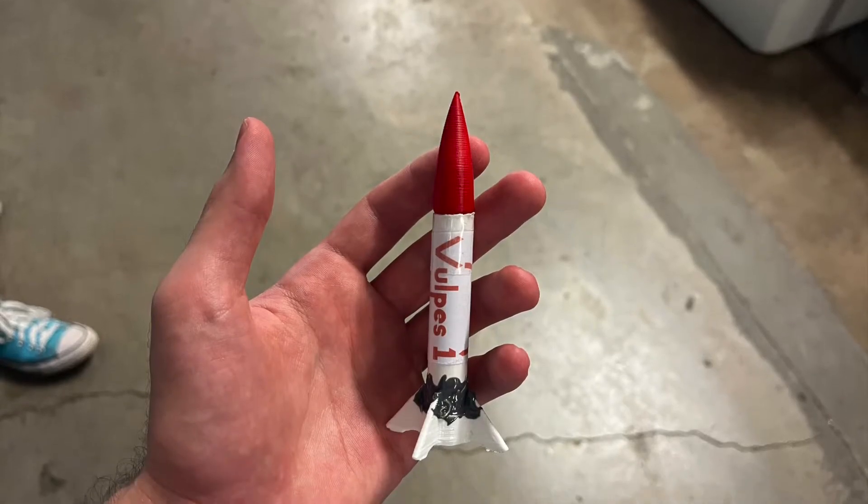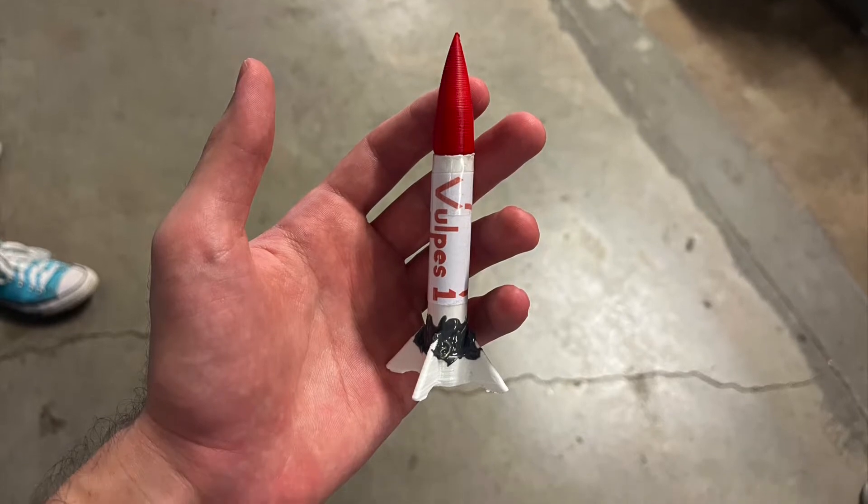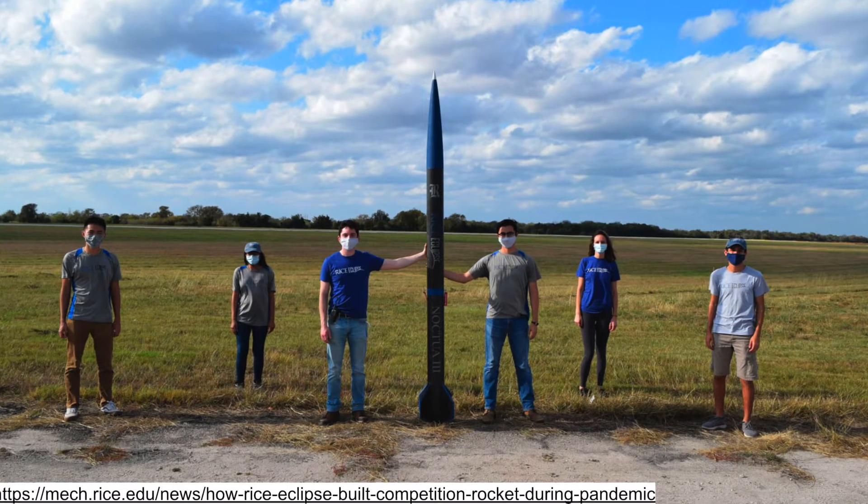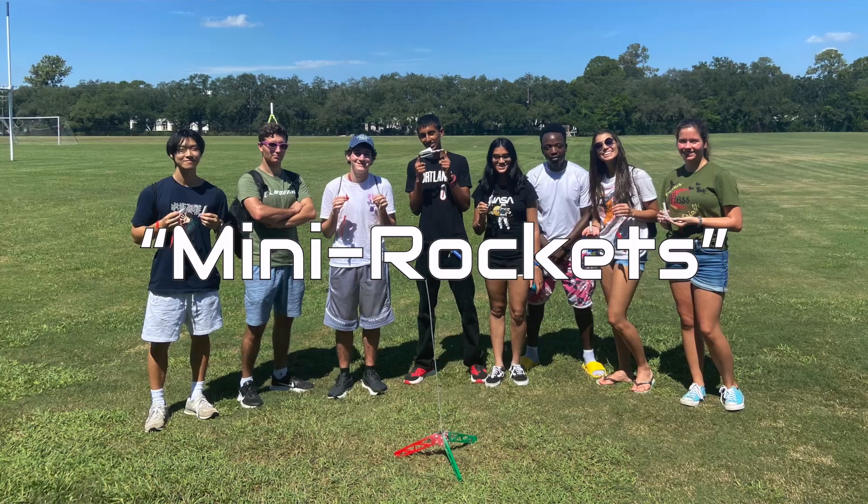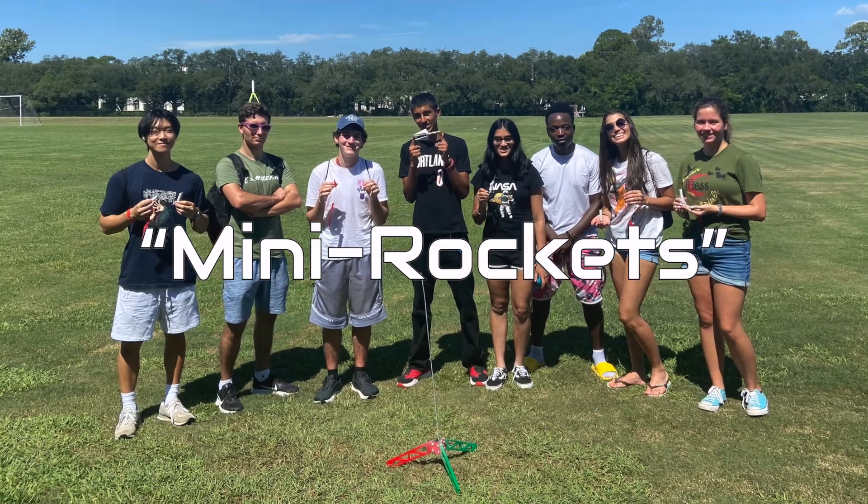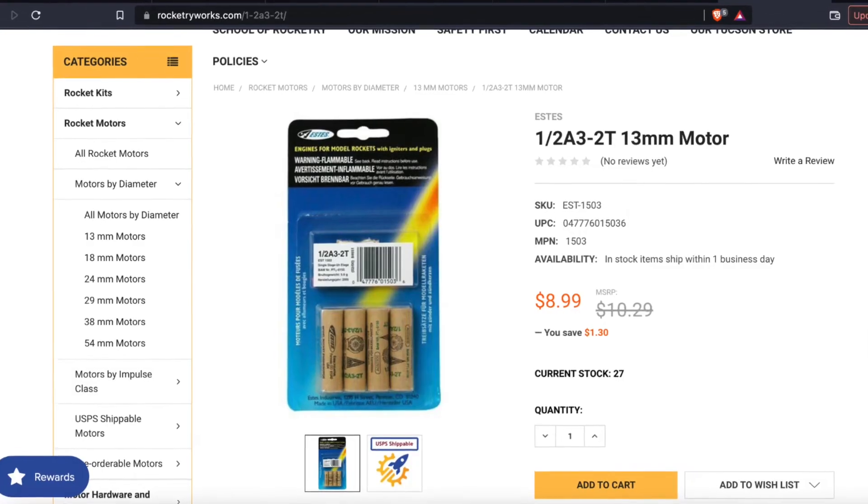At just over 11 centimeters in length, the Vulpice 1 is on the small end of hobby rocketry, a reason why Rycoclip's rocketry team designates this and similar rockets as mini rockets. The name is apt.